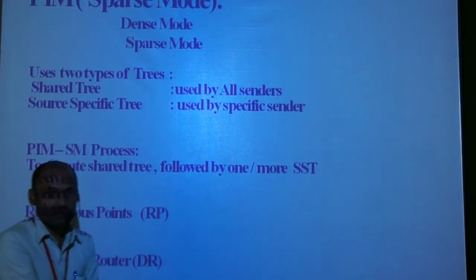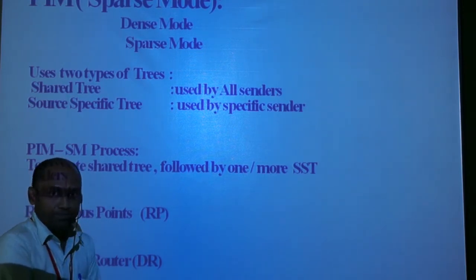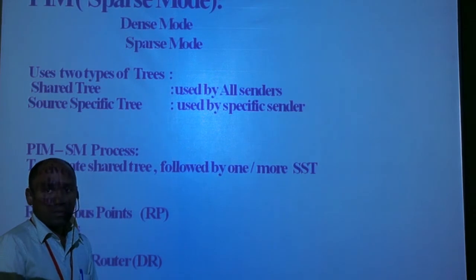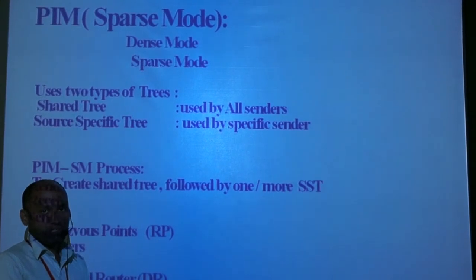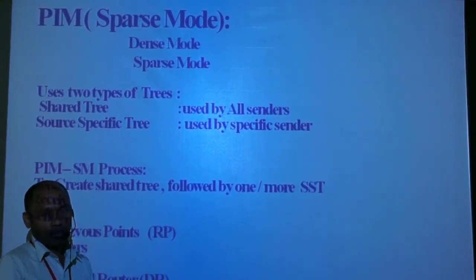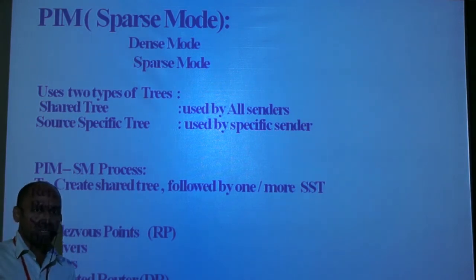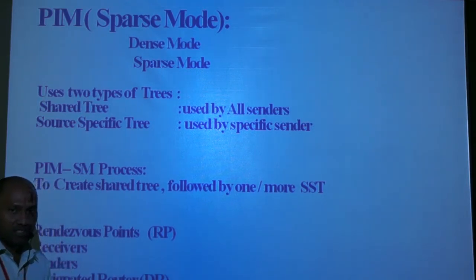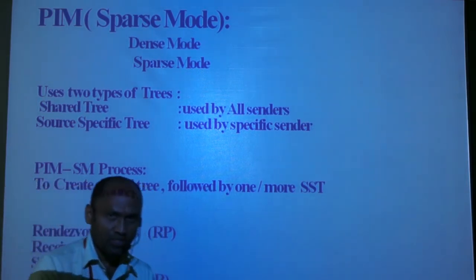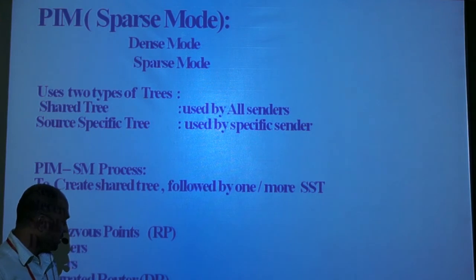The next protocol is PIM. PIM works under two different modes: sparse mode and dense mode. Sparse mode is more efficient than dense mode. It works under two types of trees: SBT and GST. It begins first with GST, followed by one or more SBTs. All senders prefer GST while one specific sender uses SBT. The important components in this process are the RP (rendezvous point), designated routers, receivers, and the designated router near the sender.